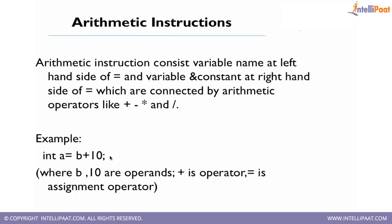For example: a = b + 10, where b and 10 are operands, plus is the operator, and equal to is the assignment operator. Here a is a variable that can be changed. Before doing this kind of initialization, b should be initialized first, otherwise you will not get a correct result.